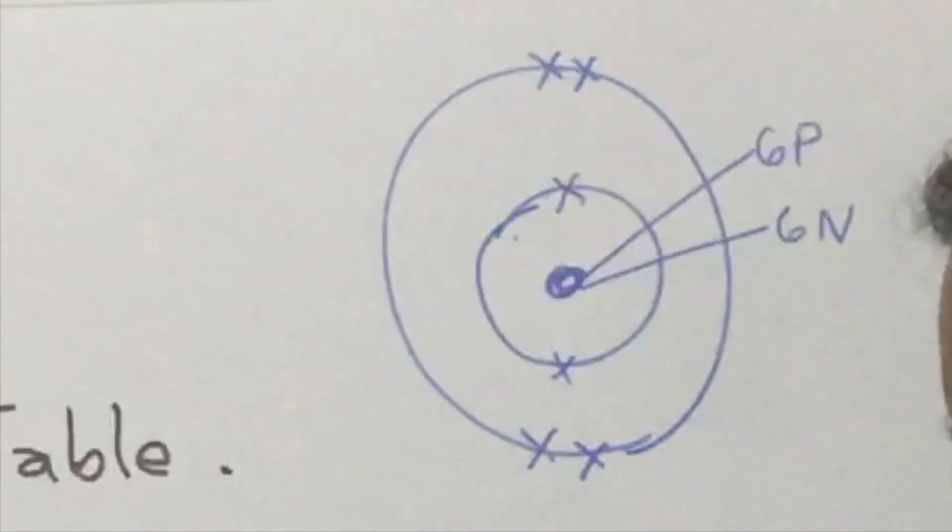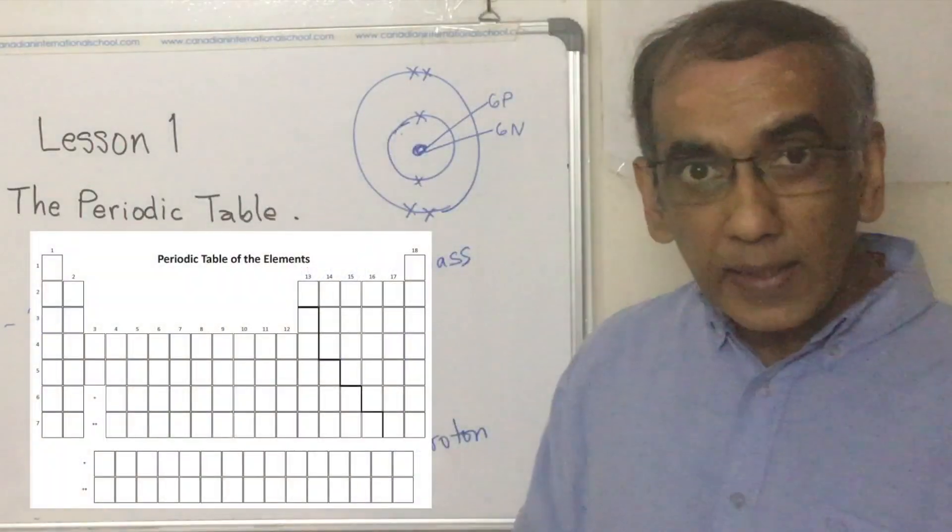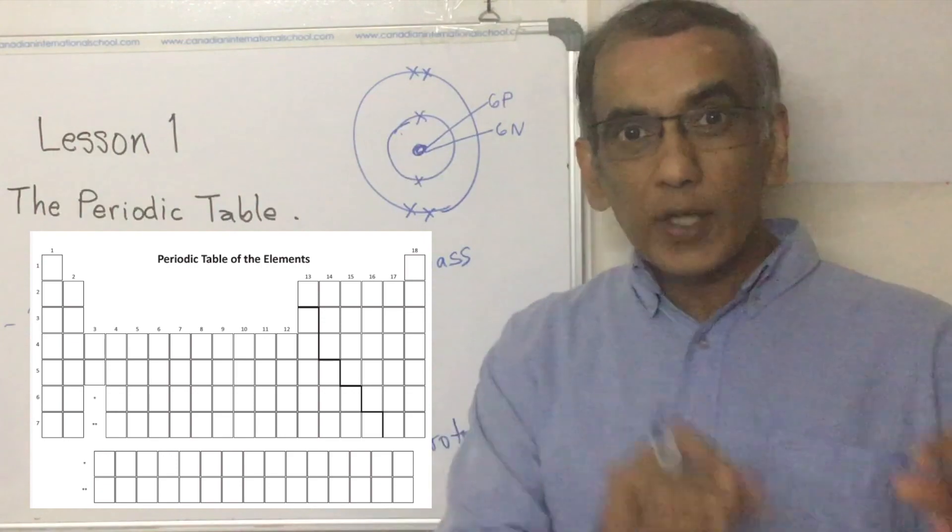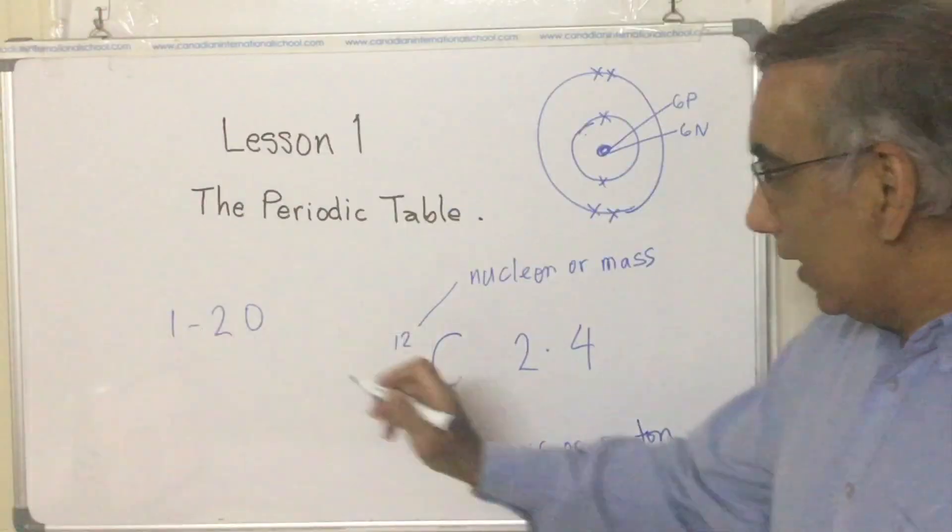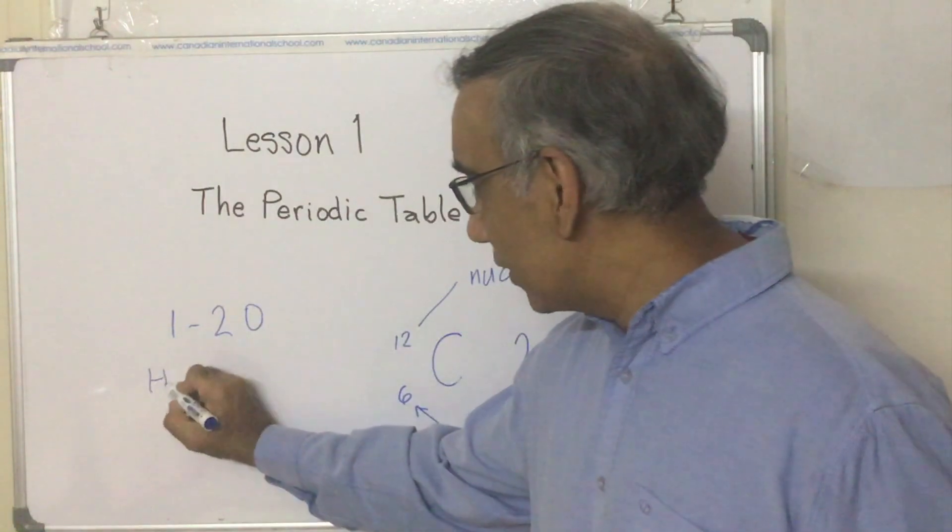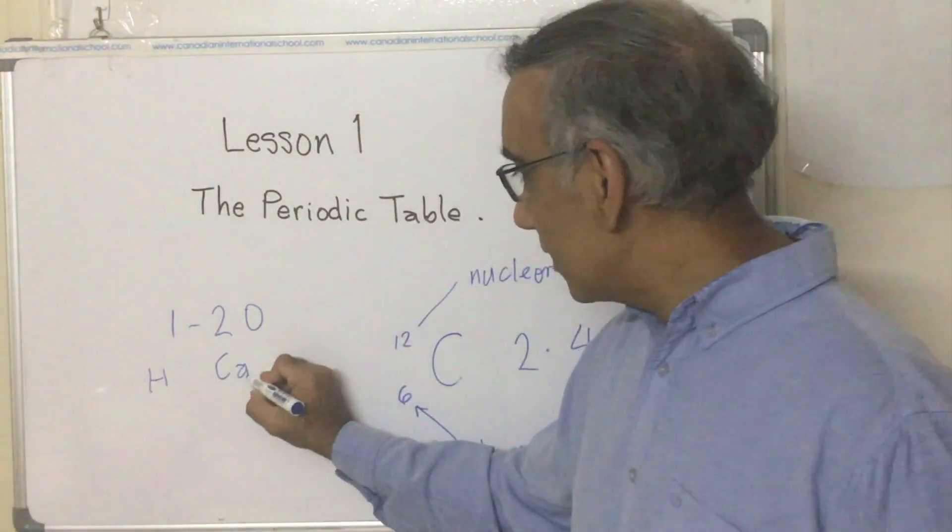So I would like you to fill out all of this information for elements 1 to 20. As you fill out elements 1 to 20, check them off on your blank periodic table where you find them. Element 1 is hydrogen. And element 20? Calcium.